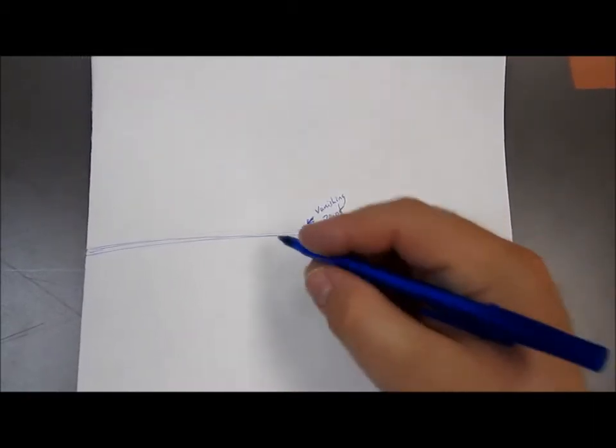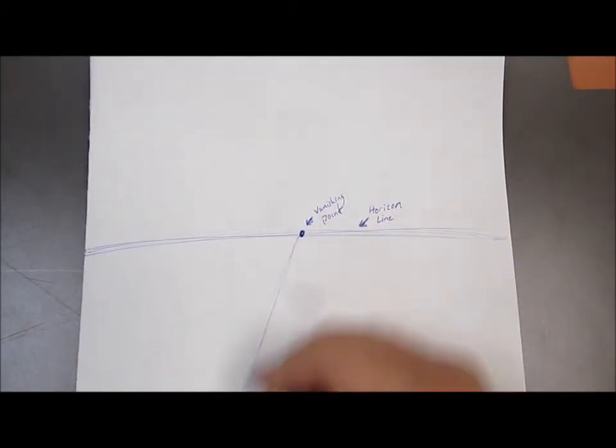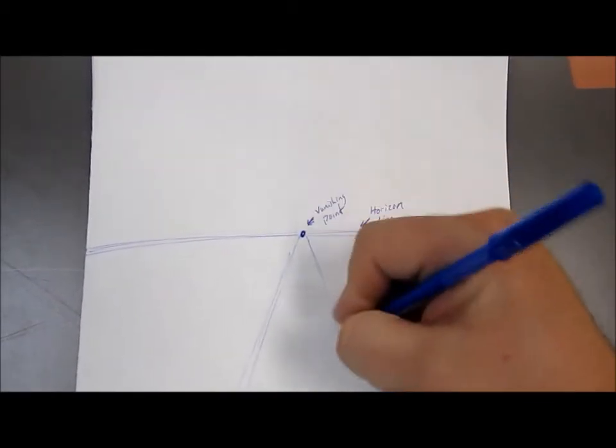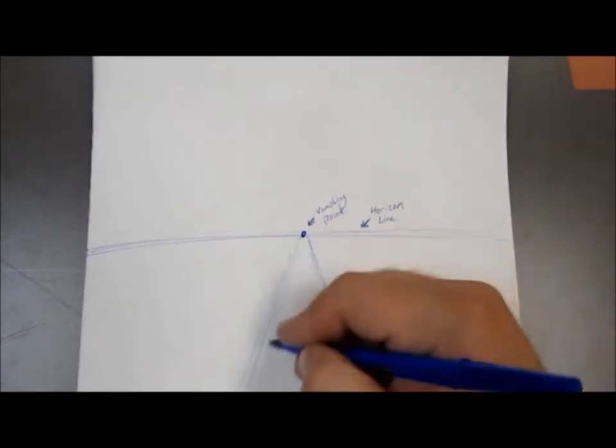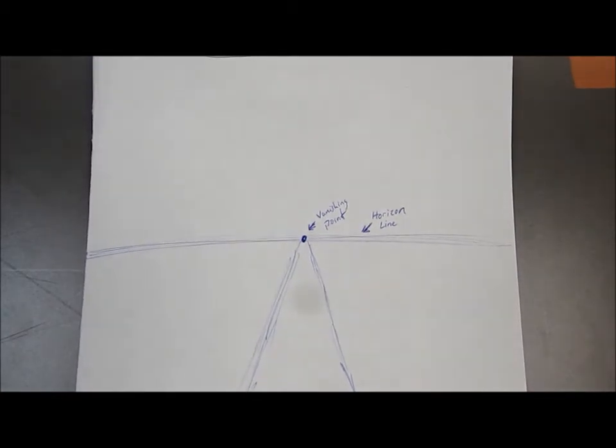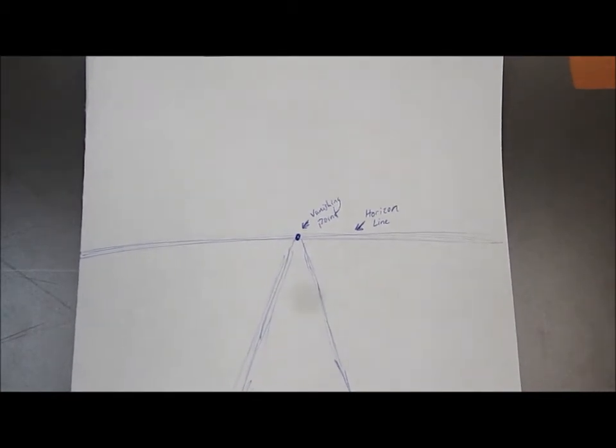Alright, now from the vanishing point we're going to do two diagonal lines. Going down south, one, two. Make sure you're sketching out your lines, you're not doing solid lines. Sketch them out. That is one of those key things that I'm trying to instill with you.